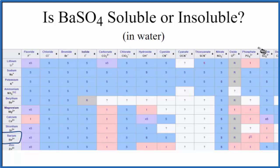We're looking for sulfate. That's way over here. So we'll go down, and then across, and there's that I. That I means that barium sulfate is insoluble in water.